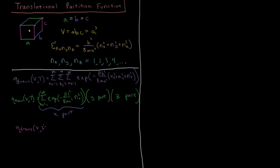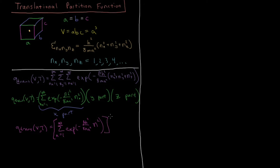So our translational partition function becomes the sum from n equals one to infinity of exponential of minus beta h squared over 8ma squared times n squared, and then this whole thing is cubed. This has all been exact so far, assuming a equals b equals c, giving us a cubic box.